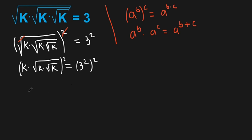So what do we have now? k squared, and then times — we can eliminate here — what's left is k times square root of k. All this equals 3 to the power of 2 times 2, which is 4. Now again I'm going to raise both sides to the power of 2.